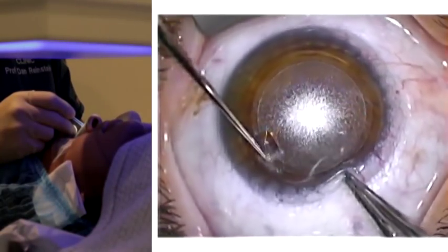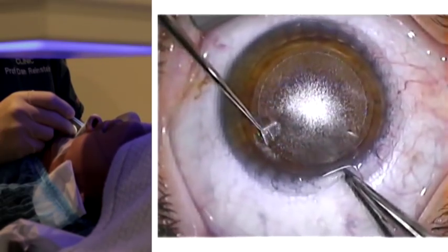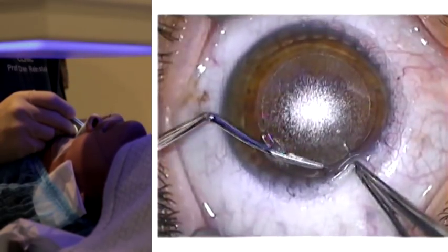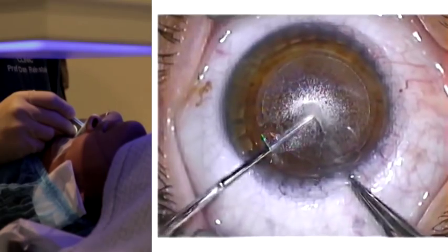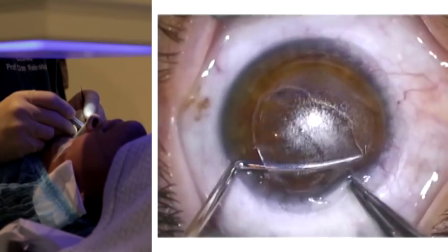We prefer to hold the eye steady for better control using a 0.12 forceps. After opening the small entry incision, both upper and lower interfaces are identified with a blunt hook. The upper interface of the lenticule is separated first using a standard lamellar dissection technique of waving a blunt spatula back and forth through the entire cap.